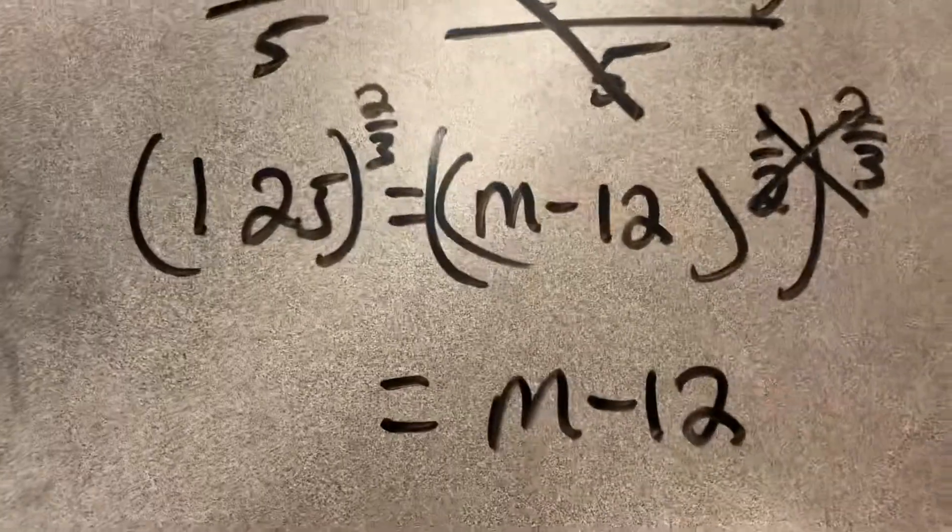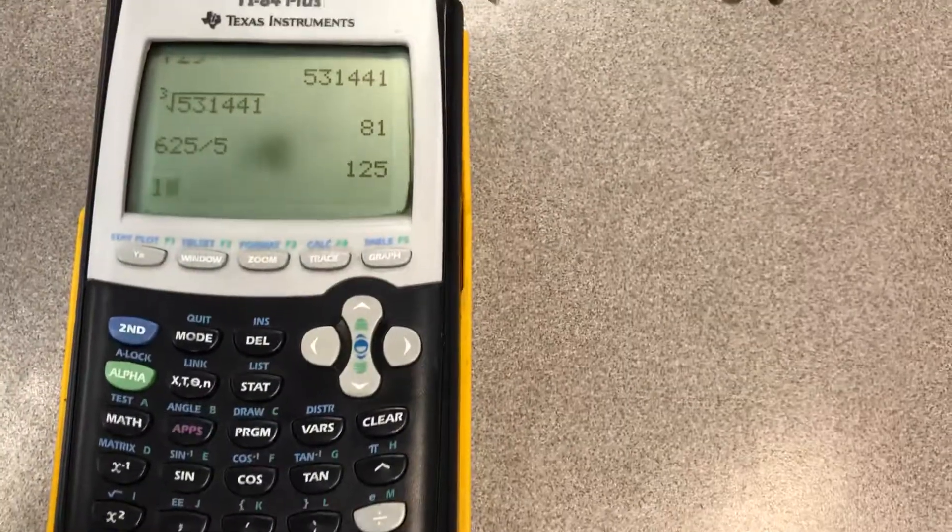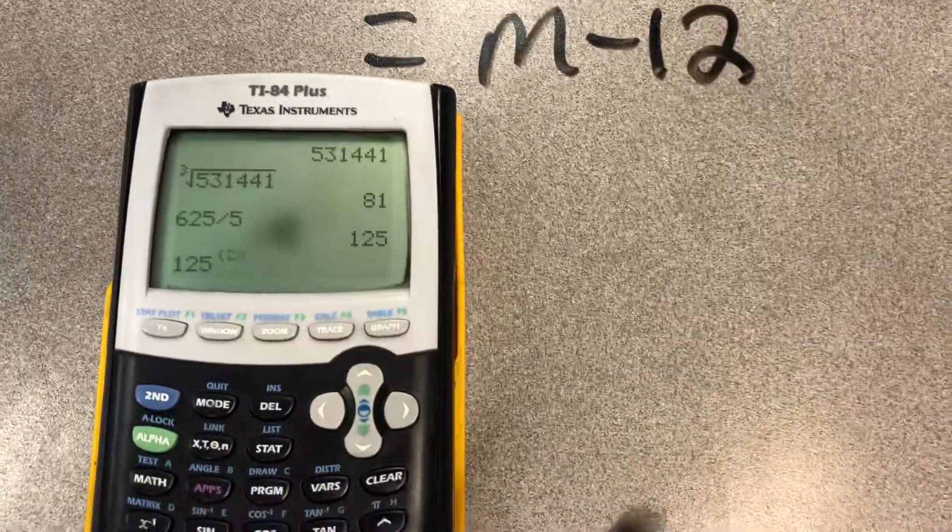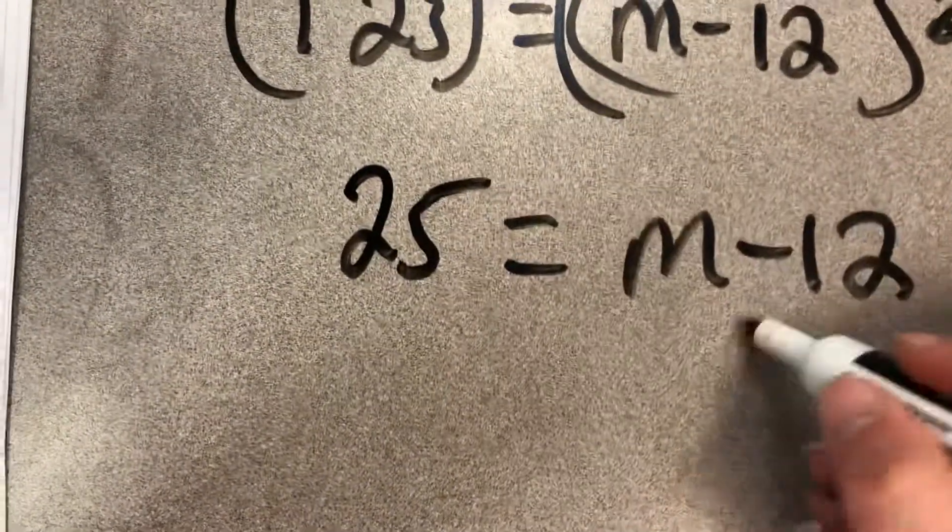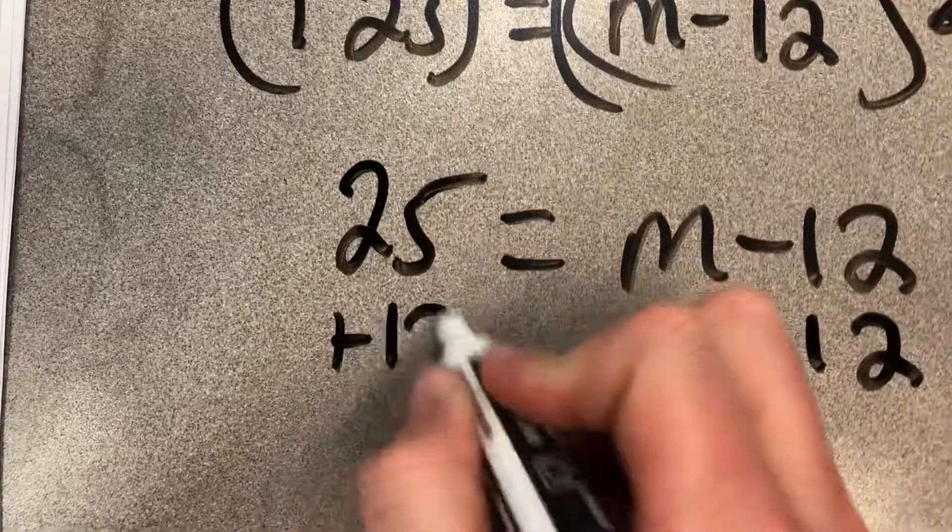And now we just need to go do this in our calculator. 125 to the 2 divided by 3. We end up getting 25. And the last step, we'll just add 12.